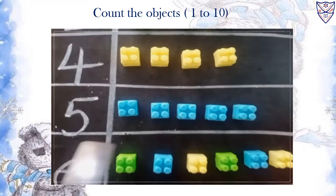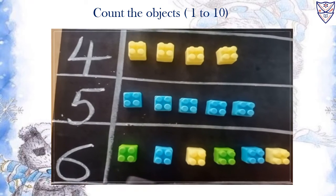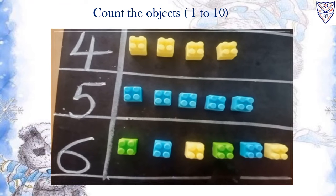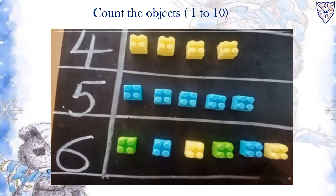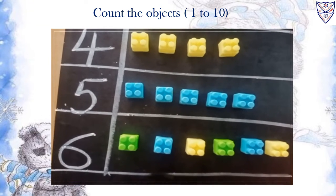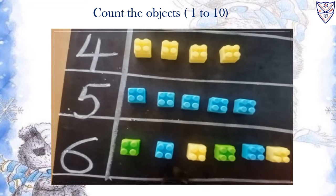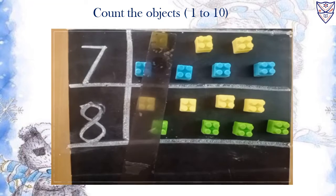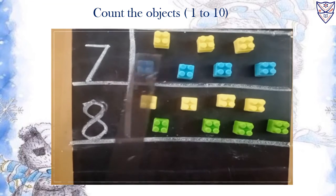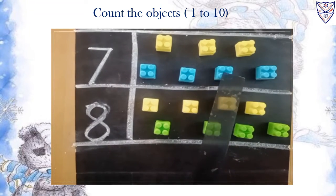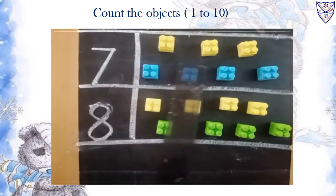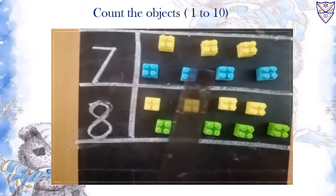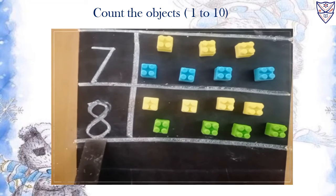5 blocks. 6 — 1, 2, 3, 4, 5, 6 — 6 blocks. 6 blocks. 7 — 1, 2, 3, 4, 5, 6, 7 — 7 blocks. 7 blocks.